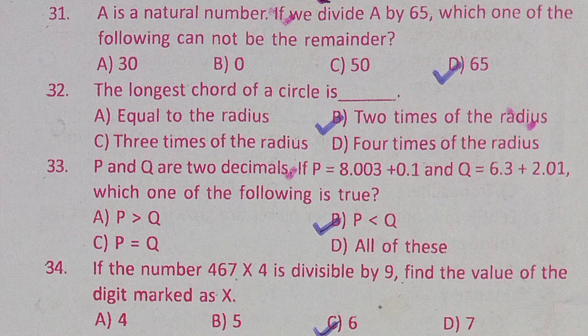Question 32: The longest chord of a circle is — Option A: equal to the radius, Option B: two times the radius, Option C: three times the radius, Option D: four times the radius. The correct answer is Option B: two times the radius.